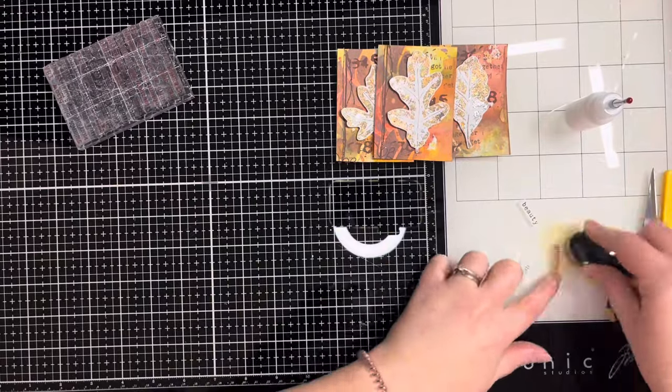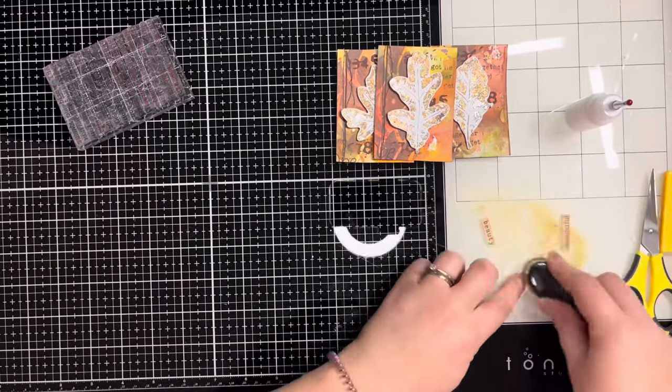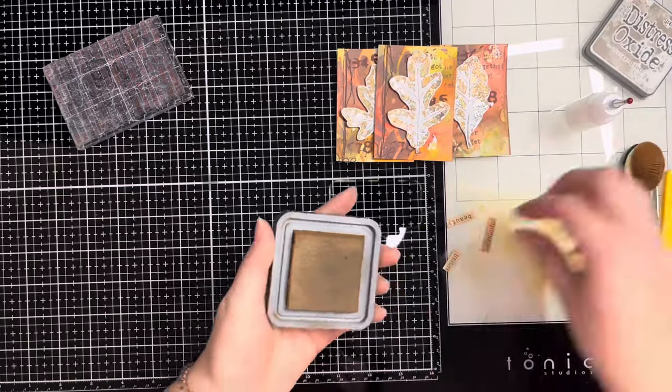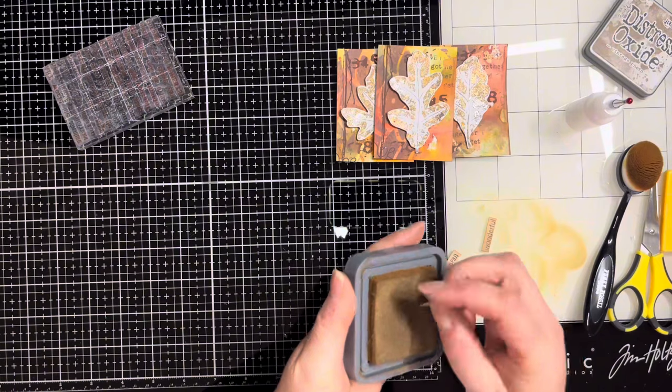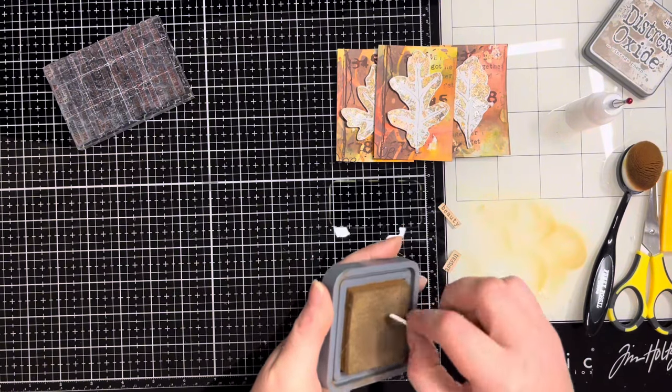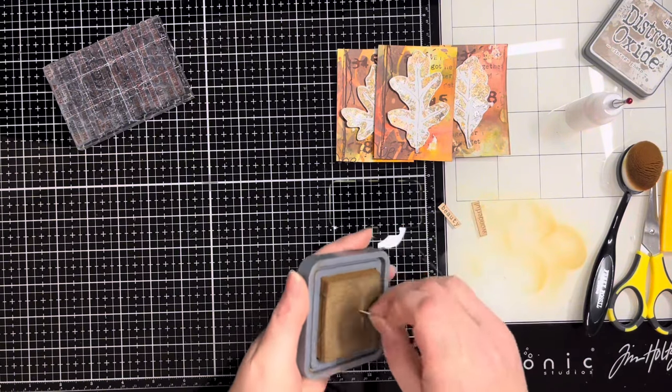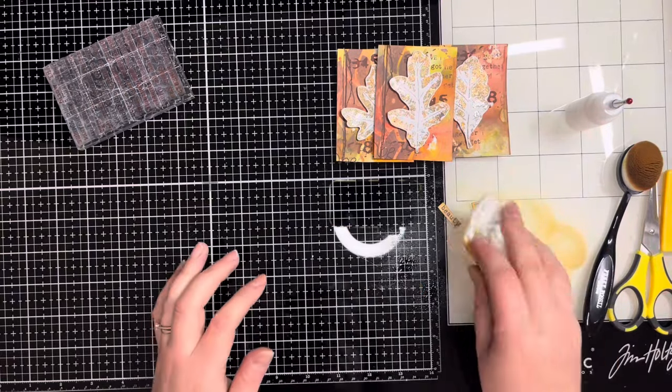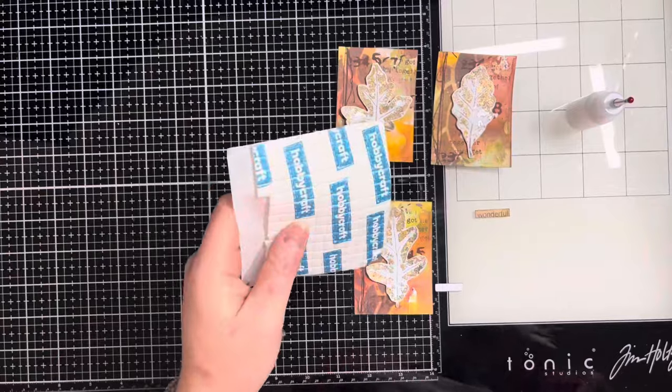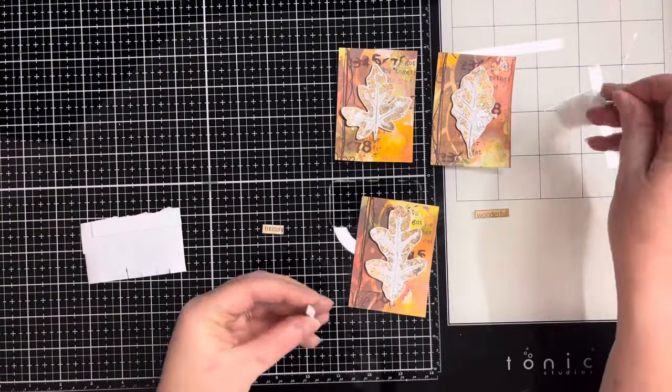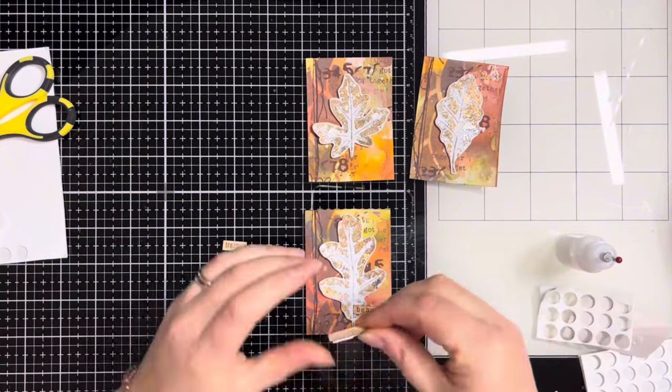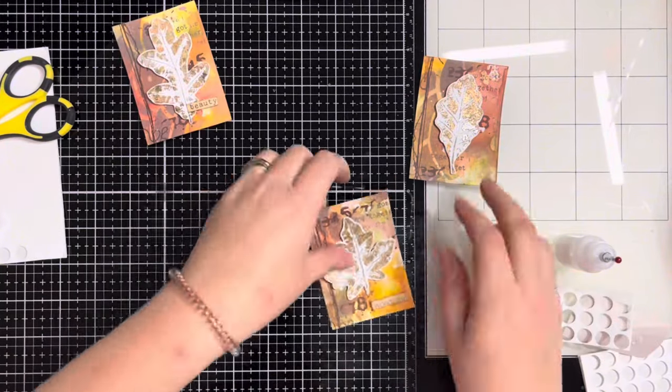I don't want my sentiments to stay white so I'm adding some Vintage Photo Distress Oxide just over the top to add extra interest and so they blend in nicely with the ATCs. I go around the edges with the Vintage Photo as well to kind of frame them. I spritz them with water for added interest. Once they've dried I'm adding foam tape to the back of each sentiment with a little bit of liquid glue to stick those down.